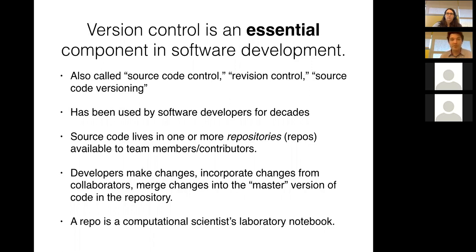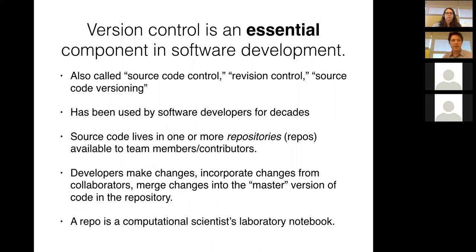Version control is also called source code control, revision control, or source code versioning. It refers to the storage of software code in repositories that are available to all contributors, whose contents are controlled and labeled by version numbers. It's been used by software developers for decades. The idea is that you put your source code somewhere where everybody can get to it and where the process of making changes is controlled in a way that allows everybody else to share in those changes.